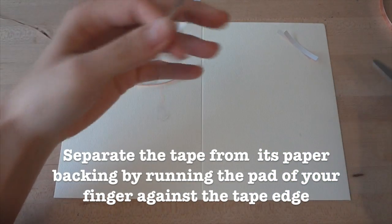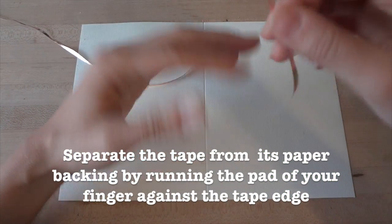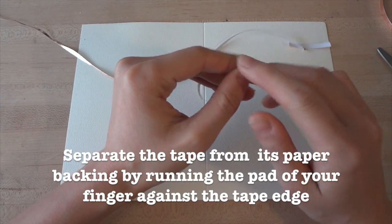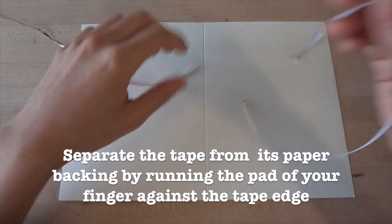Before sticking down the copper tape, you'll need to remove the paper backing. I've found the easiest way to separate the backing from the tape is to run the pad of your finger against the edge until the tape peels off.